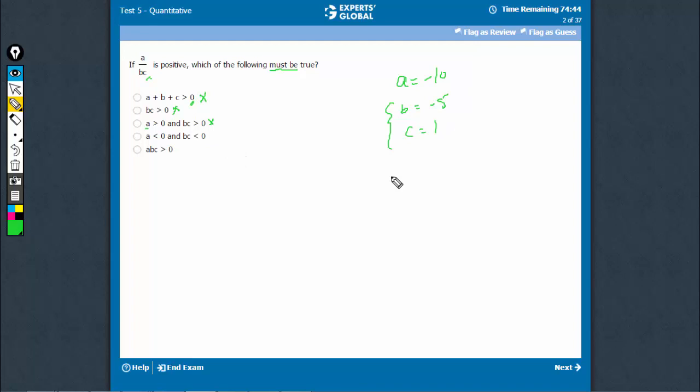a is less than 0 and bc is less than 0. There can be cases where, say, a is equal to 1, b is equal to minus 5, and c is equal to minus 10. In this case, a is less than 0 and bc less than 0 is not necessary.